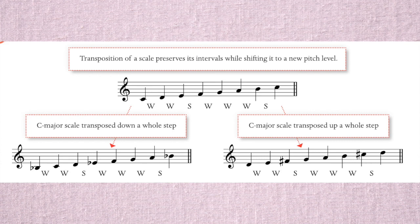The notes that result by moving those intervals starting on B-flat gives us the notes of the B-flat major scale. In this way we can have 12 major scales that all follow the same pattern, and thus they all have the same tone and color of sound.